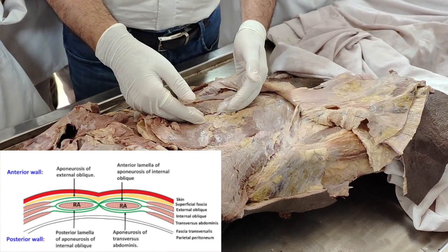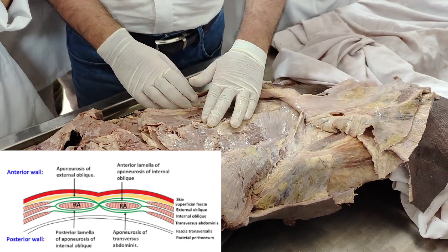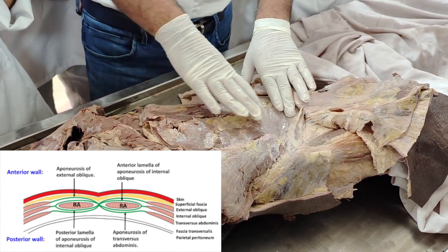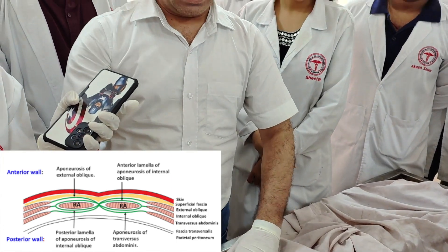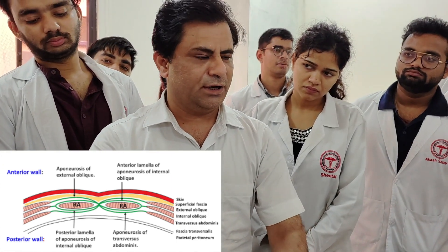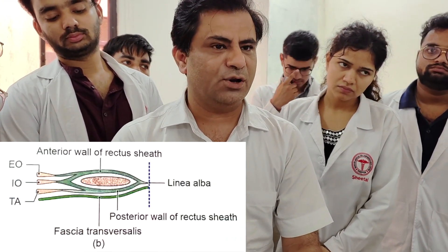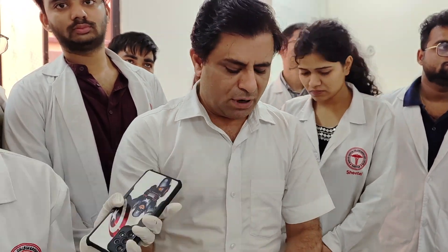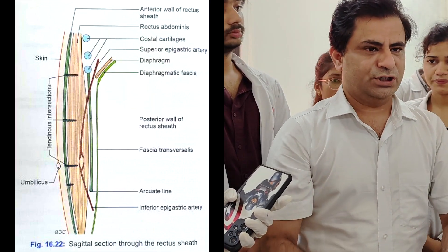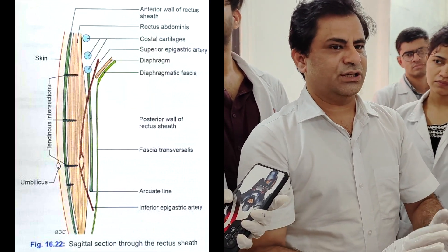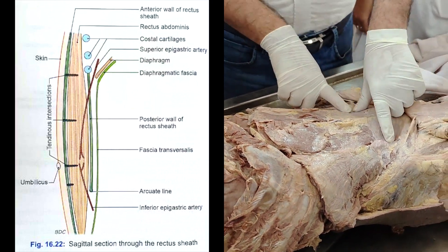This muscle is wrapped in a fibrous sheath derived from the three muscles on both sides — the rectus sheath. Anteriorly it is formed by the aponeurosis of the external oblique and the anterior lamina of the internal oblique. Posteriorly you have the posterior lamina of the internal oblique and the transversus abdominis. However, below the umbilicus there is a gap, and there is an arcuate line.